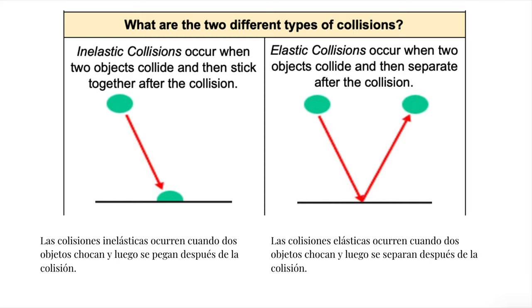However, in the elastic collision, the ball bounces back off the wall. You can think of elastic like a rubber band, where it snaps back if you were to flick it.